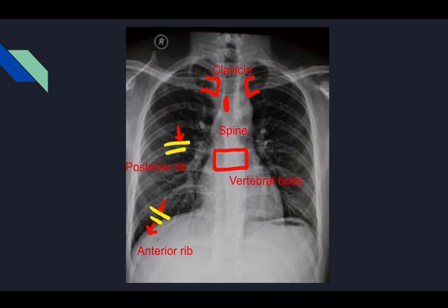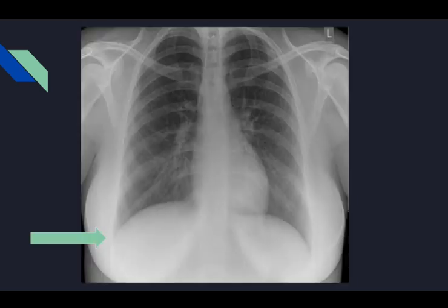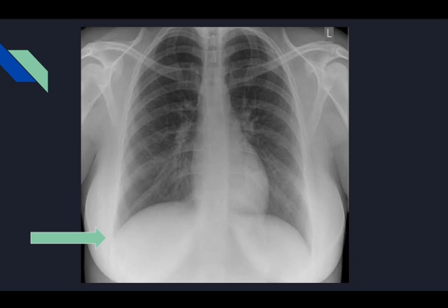Finally, look at all soft tissues visible on the X-ray for any soft tissue lesions, and check for asymmetry or anything present between the two breasts in female patients. That covers in brief the anatomy you need to know when reading a chest X-ray.